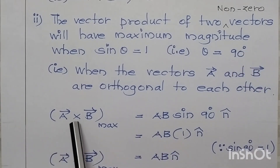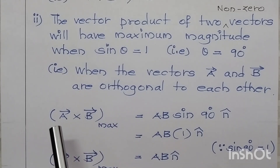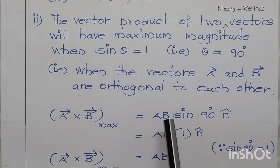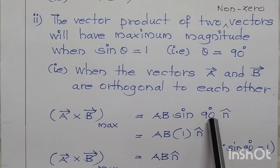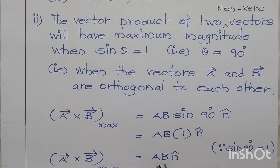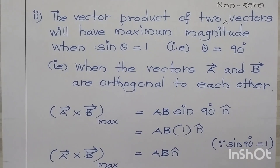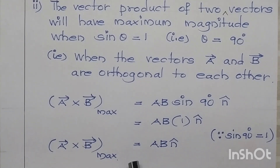So, A vector cross B vector maximum is equal to AB sin theta N-cap. When theta is 90 degrees, sin 90° equals 1, so A vector cross B vector maximum equals AB into 1, which gives AB N-cap.